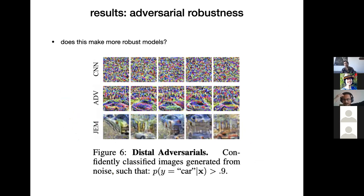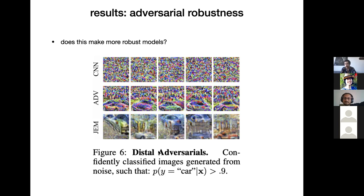To understand why this works, we generated adversarial examples by starting from random noise and optimizing to be classified as a car with greater than 90% confidence. A standard ResNet produces nonsense. An adversarially trained model produces something car-like but far from natural image statistics. With JEM, car-like features arise and image statistics are much closer to the dataset — because we tie the classifier logits directly to the log-probability function of the distribution.